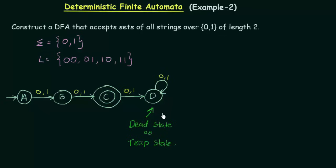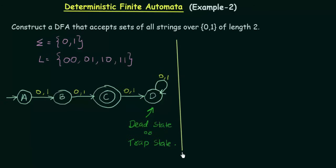Now my DFA is complete, because for every state I have defined what happens when I get input 0 or 1. I have successfully designed the DFA that accepts sets of all strings over 0,1 of length 2. Let us take a few examples and check if this is working correctly.